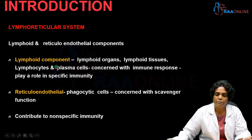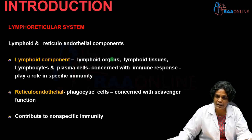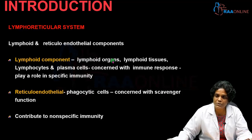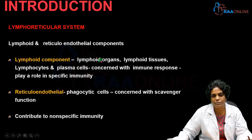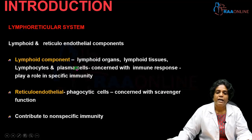The lymphoid component plays a major role in specific immunity. It consists of the lymphoid organs — the primary or central lymphoid organs like thymus and bone marrow — and the peripheral or secondary lymphoid organs like lymph node and spleen. It also includes lymphoid tissues like mucosa-associated lymphoid tissue, gut-associated lymphoid tissue, or cutaneous-associated lymphoid tissues, and the immune cells including B lymphocytes, T lymphocytes, and effector cells such as plasma cells.